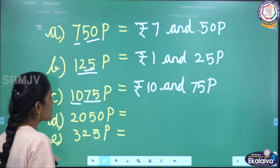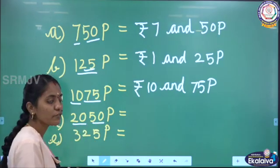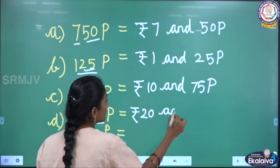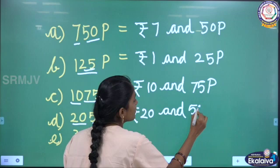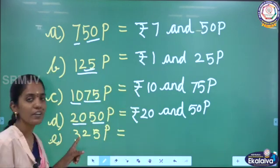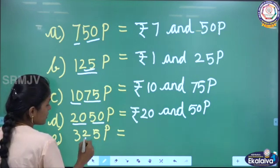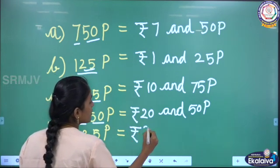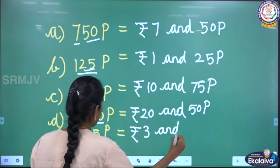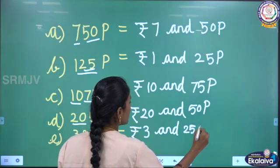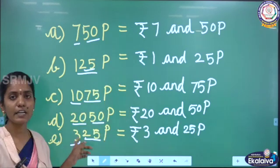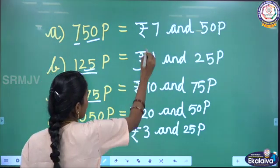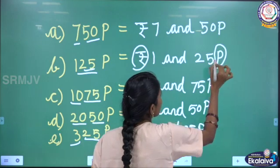Next, we have 2050 peise — rupees 20 and 50 peise. The last one, we have 325 peise. Here, the first 2 digit numbers on the right are peise and remaining is rupees. So rupees 3 and 25 peise. For rupees, we must write the rupees symbol, and for peise, we have to write the peise symbol.